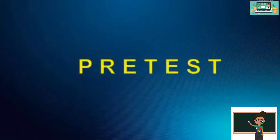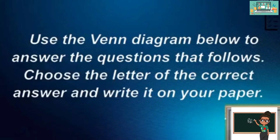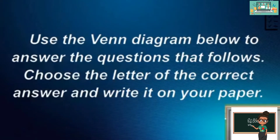Let's have a pre-test. Use the Venn diagram below to answer the questions that follow. Choose the letter of the correct answer. We will give you 5 seconds for each question.